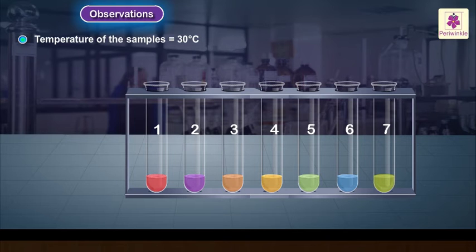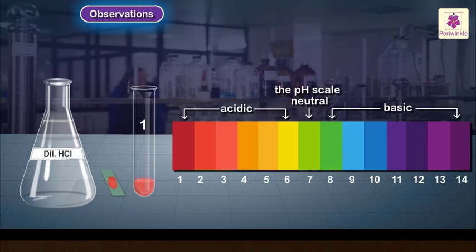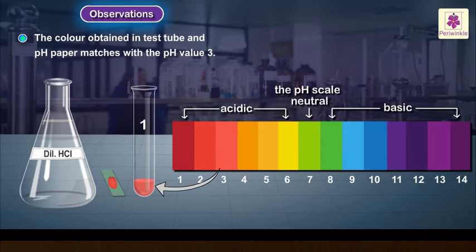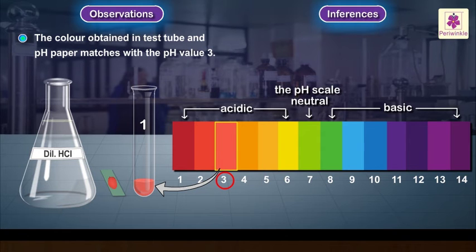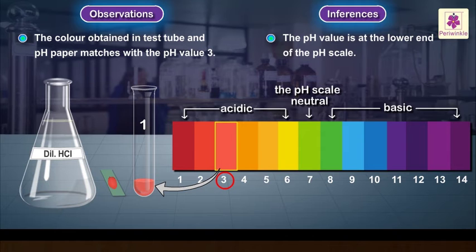Temperature of the samples is equal to 30 degrees Celsius. Dilute hydrochloric acid solution: the color obtained in the test tube and pH paper matches with pH value 3. Inference: the pH value is at the lower end of the pH scale.